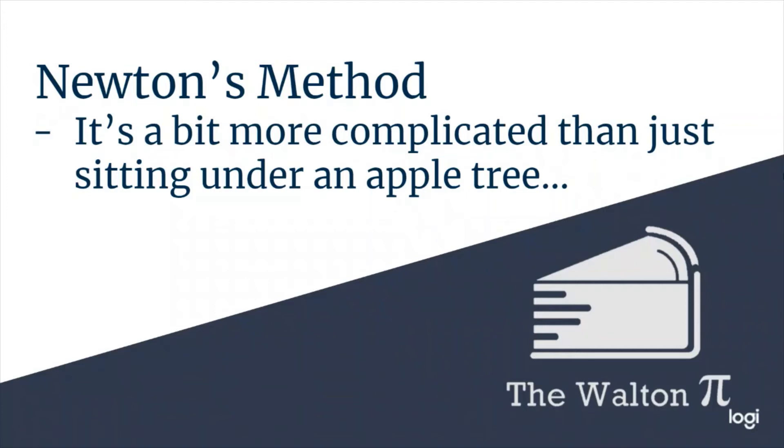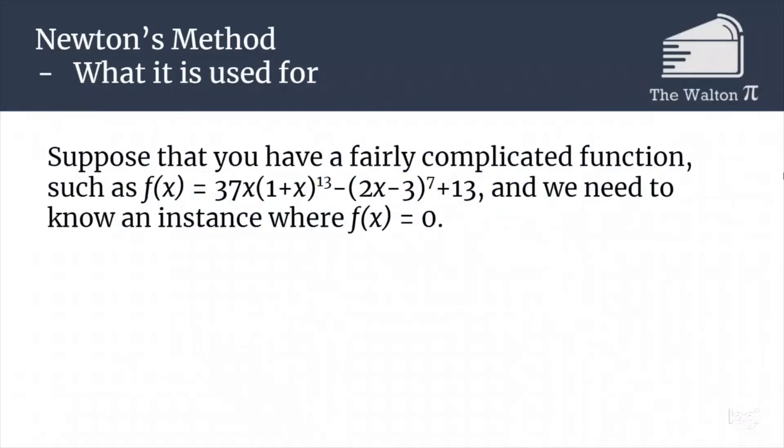Welcome to the Walton Pi. Today we're going to be talking about Newton's method for approximating zeros of a function. Let's suppose that we have a fairly complicated function such as f(x) = 37x(1+x)^13 - (2x-3)^7 + 13, and we need to find a place where f(x) is equal to zero.